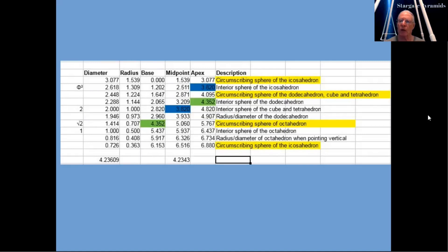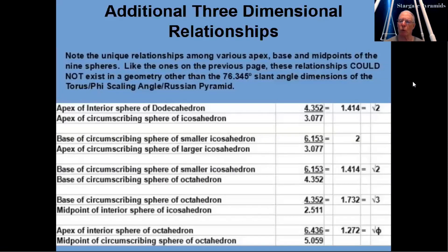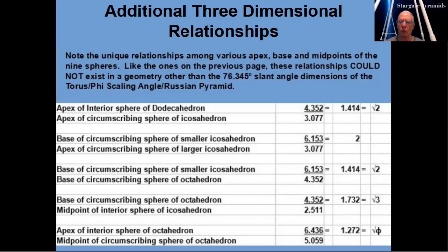Those two points are confirmations, and I want to show you some more interesting ratios I've found. When I started looking at the various apex, base, and midpoints of these nine spheres in Lawler's diagram, these relationships could not exist in a geometry other than the 76.345-degree slant angle dimensions of the torus-phi-scaling angle in Russian pyramids. I've got five new examples demonstrating these relationships.